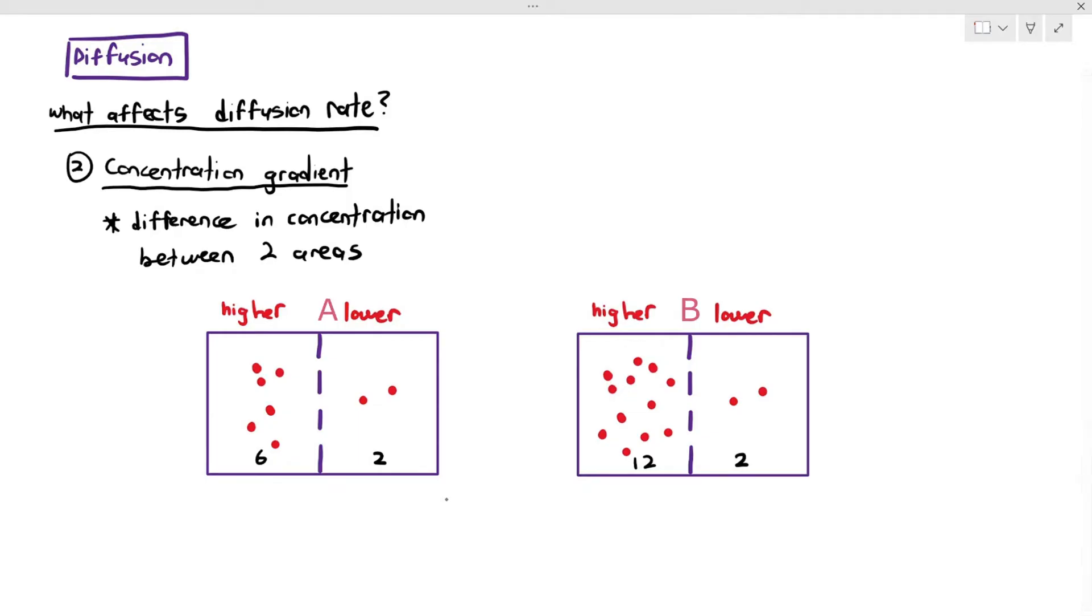Now, in both A and B, the particles will still move from left to right. Why? Because diffusion is from higher to lower concentration. But in which case will diffusion happen at a higher rate?